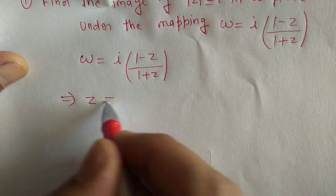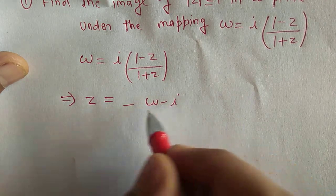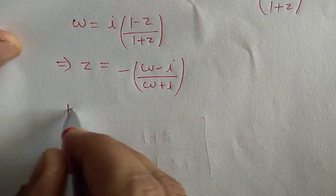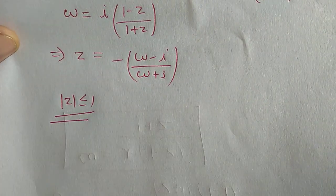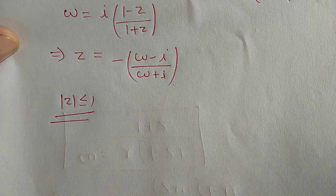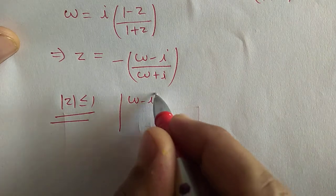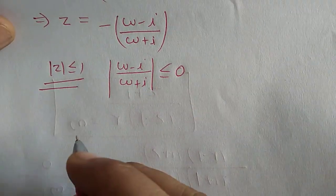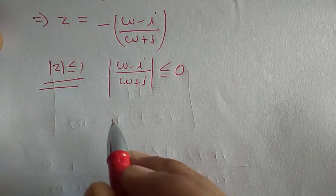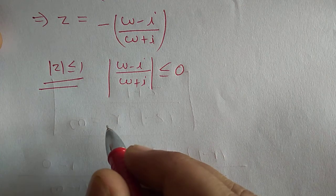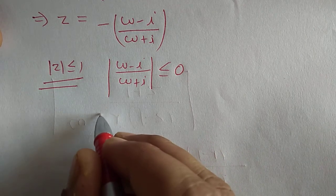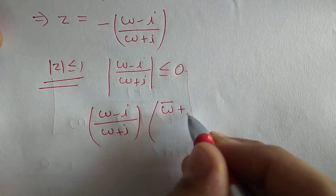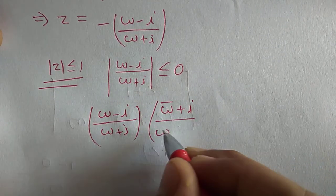Let us find the image. We have w = i(1 − z)/(1 + z). Simplifying, we get z = (−w − i)/(w + i). The region in the z-plane is |z| ≤ 1, so the corresponding region in the w-plane will be expressed in terms of |w − i| and |w + i|.